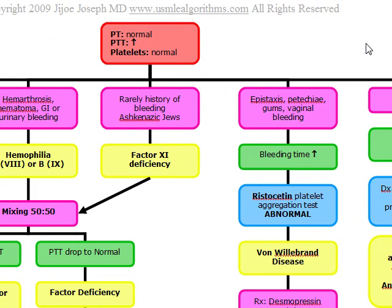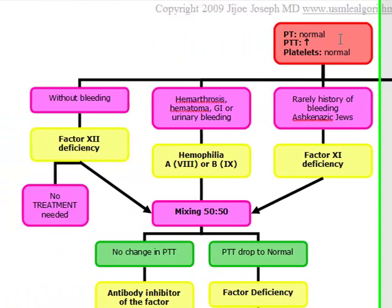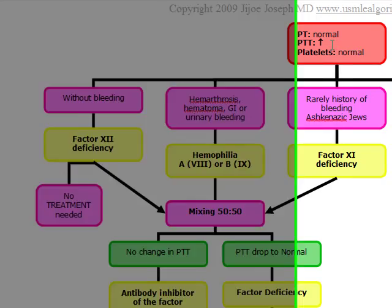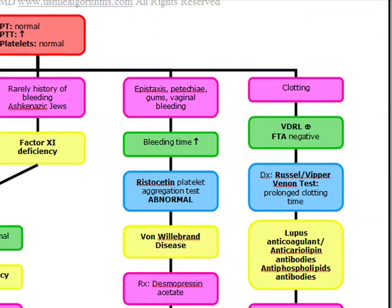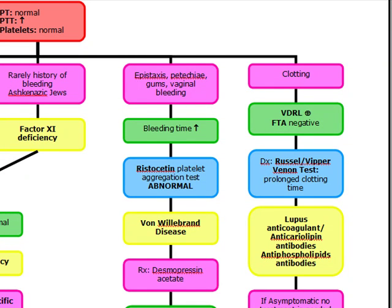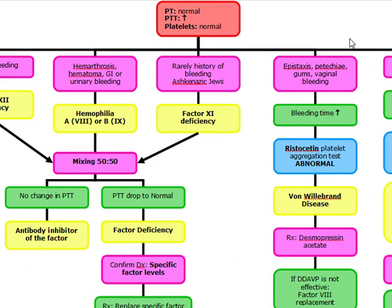If a patient presents with a platelet-type bleeding pattern — normal PT, normal platelets, increased PTT — but has epistaxis, petechiae, vaginal bleeding, or bleeding of the gums, think von Willebrand's disease. This is caused by decreased von Willebrand factor, leading to decreased platelet adhesion to the endothelial lining. It is an autosomal dominant disease and the most common congenital disorder of hemostasis.